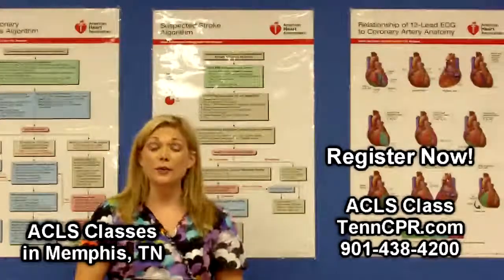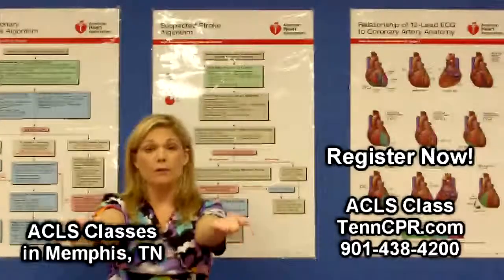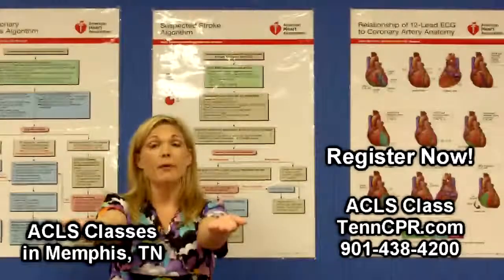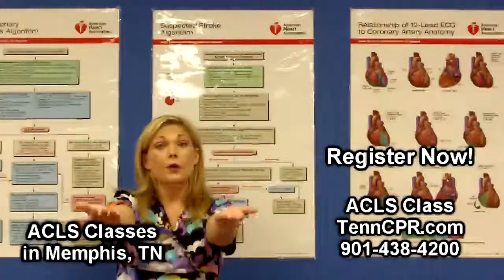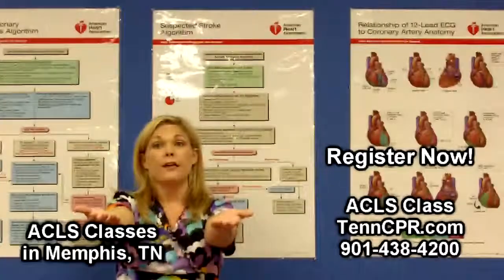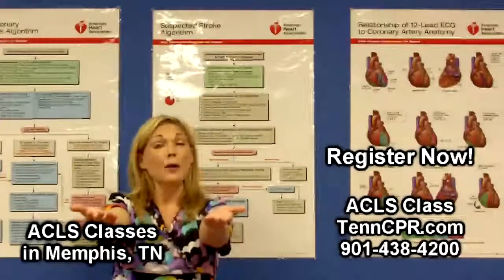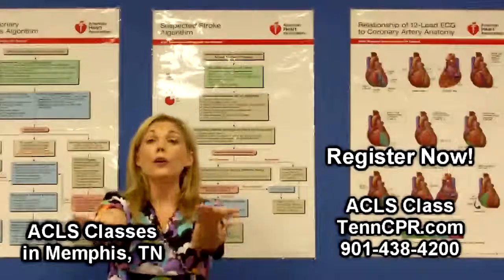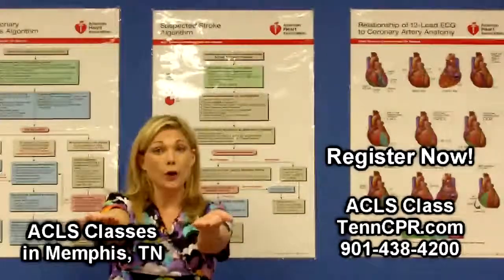The second thing you would do is have the suspected stroke victim hold both arms out in front of them, palms facing up, for at least 10 seconds. If they are equal and able to hold their arms there, that would not be a sign of a stroke. However, if one arm were to drift downward, or if they were not able to raise one arm upward, that would be abnormal.